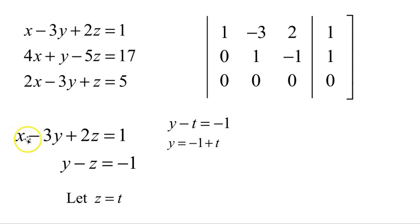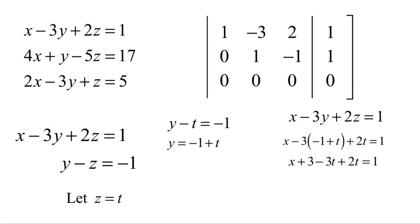I can also solve for x. We have x minus 3y plus 2z equals 1, but y is negative 1 plus t and z is t. So x minus 3 times (negative 1 plus t) plus 2t equals 1. Negative 3 times negative 1 is positive 3, negative 3 times t is minus 3t. So we get x plus 3 minus 3t plus 2t equals 1. Minus 3t plus 2t is minus t, so x plus 3 minus t equals 1. Subtracting 3 from both sides, negative 2. Adding t to both sides, plus t. So x equals negative 2 plus t.